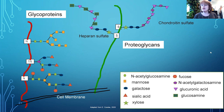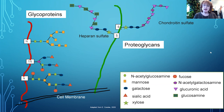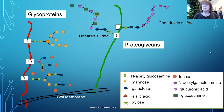Proteoglycans are very important — for instance, in allowing your joints to move. They're really slippery, and you might see some of these in medications for joint health. They're made from a polypeptide chain with long chains of carbohydrates attached in repeating units. In heparin sulfate, we have repeating residues of glucuronic acid and glucosamine alternating.